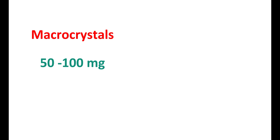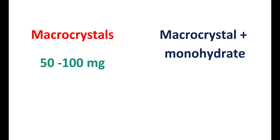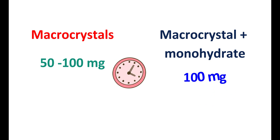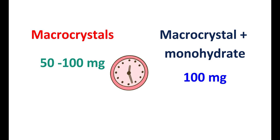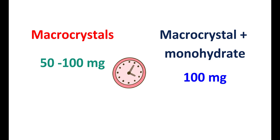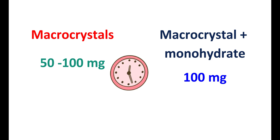In the form of macrocrystals, it can be started at a dose range of 50 to 100 mg given every six hours for seven days. It can also be given as Macrobid, which is a combination of macrocrystals and monohydrate in the ratio of 25% to 75%. This Macrobid formulation can be given at a dose of 100 mg twice daily for seven days. To minimize gastrointestinal side effects, Nitrofurantoin should be taken along with food, which can also increase the bioavailability of this medication.